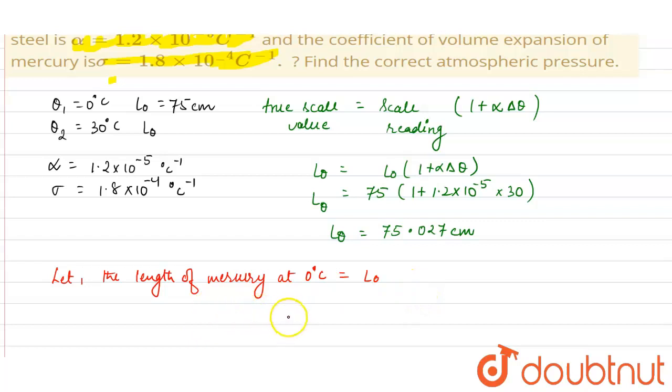So what we can say from here is, L theta that is at 30 degree Celsius equals L0 1 plus, the relation between the coefficient of volume expansion and coefficient of linear expansion is, the coefficient of linear expansion equals volume expansion upon 3.